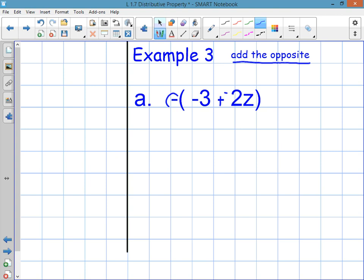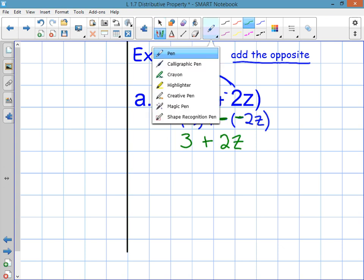So the negative on the outside gets distributed to each term on the inside. And you're going to write it out: negative times negative 3 plus negative times negative 2z. This negative is this one and this one. A negative times a negative is a positive. So the opposite of negative 3 is positive 3 plus a negative times a negative is positive. So 2z, the answer is just 3 plus 2z.